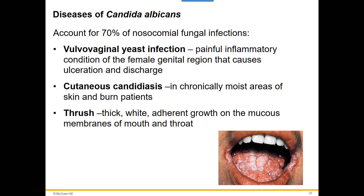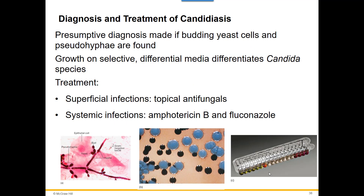Candida can also grow in the mouth, causing what's known as thrush — a thick white growth anywhere on the mouth and throat. Diagnosing: you can do scrapings, look for budding yeast cells, look for hyphae, or grow it on different types of media. Treatment options include topical creams and antifungals. If it's getting into the body beyond superficial — Amphotericin B or fluconazole.